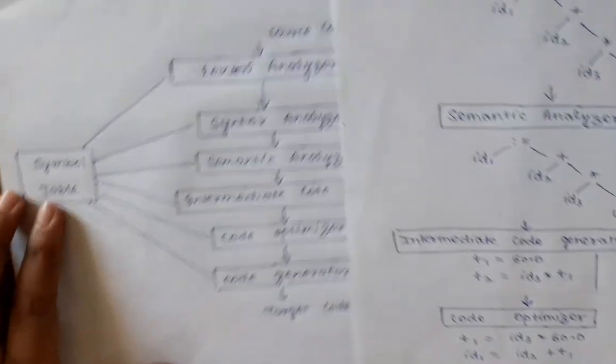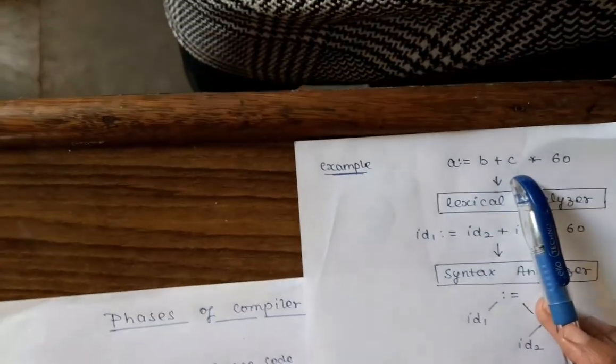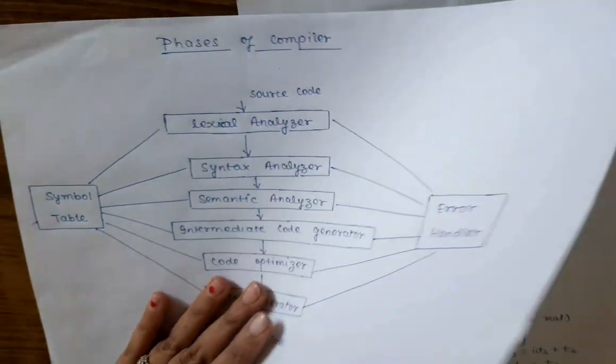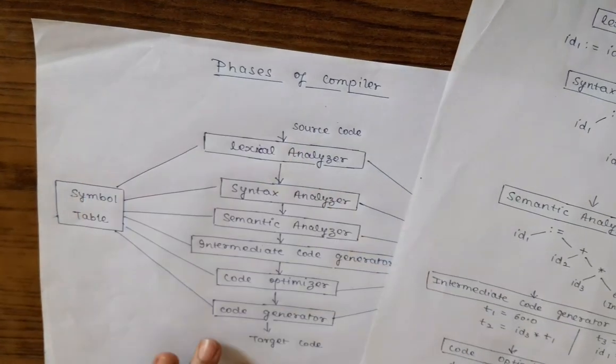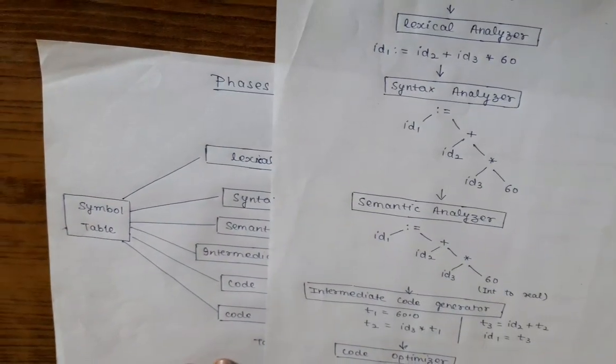In the symbol table, A, B and C are stored. And error handler handles all the errors which are produced in these phases. Thank you. Thanks for watching.